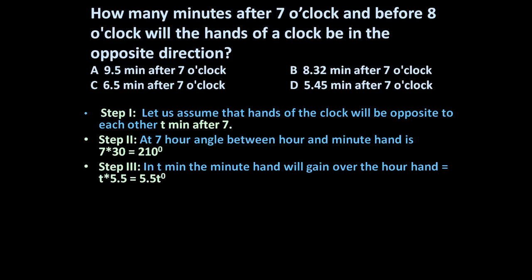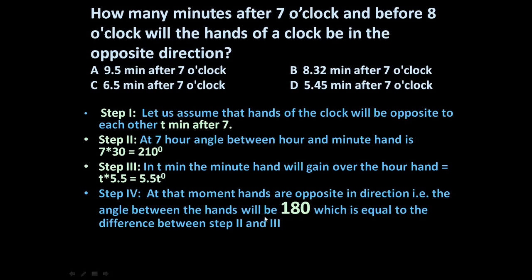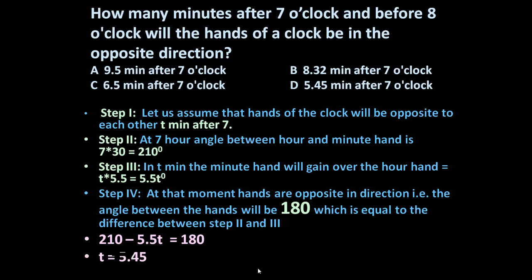Step 4: When the two hands are opposite in direction, the angle between them must be 180 degrees. So at that moment: 210 minus 5.5t equals 180 degrees. This is the difference between the initial angle at 7 o'clock and the gain made by the minute hand over t minutes.